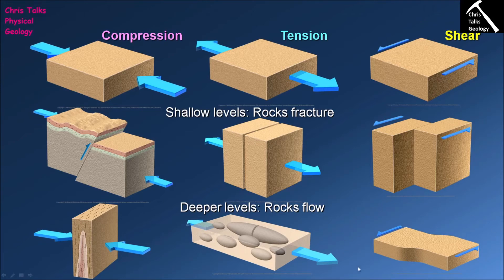When we apply shear stress to rock capable of ductile flow, one side wants to move toward the bottom-left and the other toward the top-right, but the rock can't fail in a brittle fashion. Instead, it flows, and the movement is accommodated by the central portion deforming in response to the shear stress. We see deformation within the core of the shear zone as predominantly folding, and we may also see the formation of a foliation due to the parallel alignment of minerals.